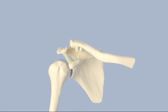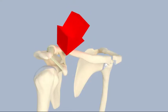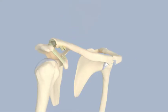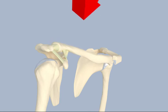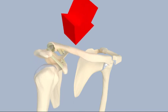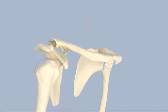Type 4 AC injuries occur when the ligaments that stabilize the acromioclavicular joint are completely torn and the clavicle is pushed backwards into the trapezius muscle. This injury requires surgical repair.